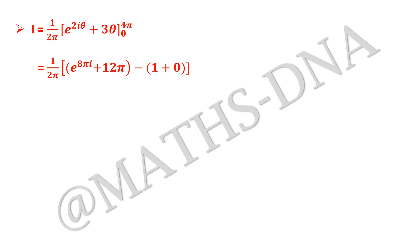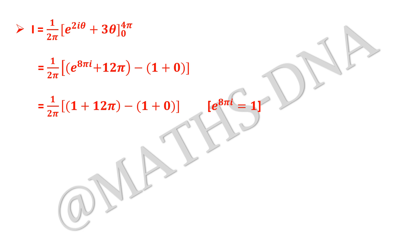On solving this we get (1/2π)[e^(8πi) + 12π − 1 + 0]. Since e^(8πi) = 1, this becomes (1/2π)[1 + 12π − 1] = (1/2π)·12π = 6. Hence the correct answer is 6.